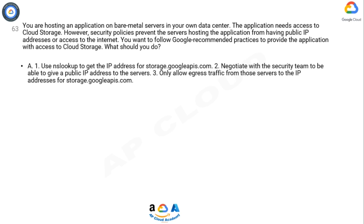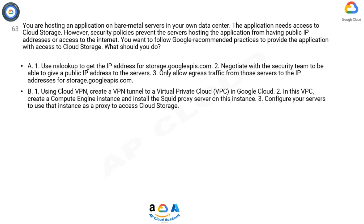Option A: 1) Use nslookup to get the IP address for storage.googleapis.com. 2) Negotiate with the security team to be able to give a public IP address to the servers. 3) Only allow egress traffic from those servers to the IP addresses for storage.googleapis.com.